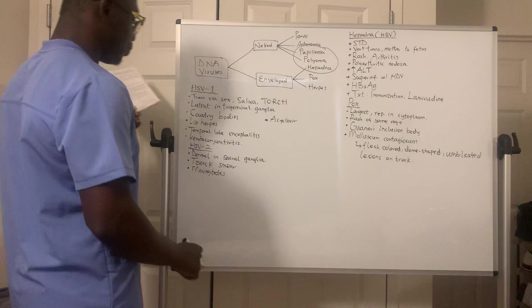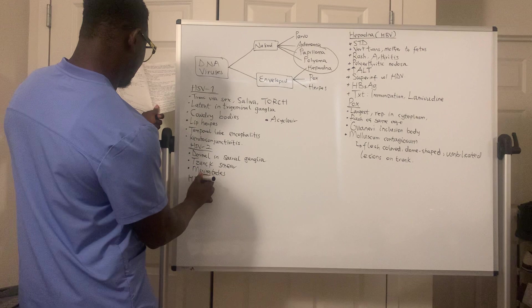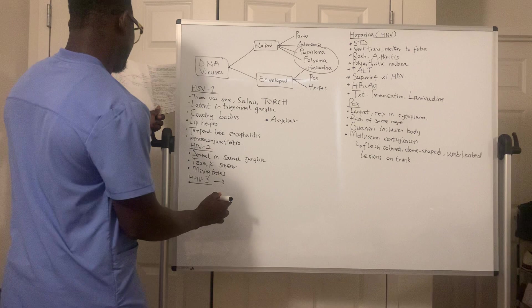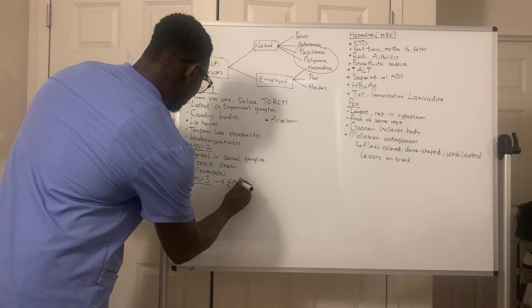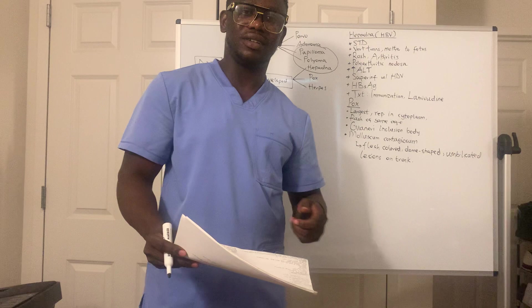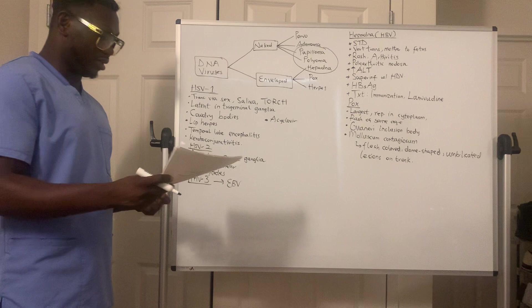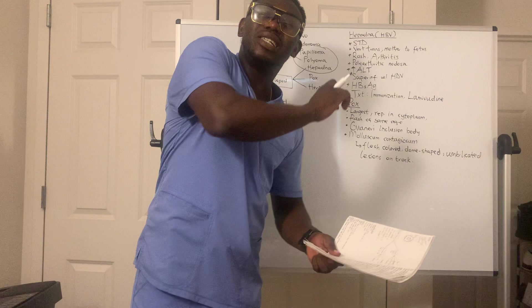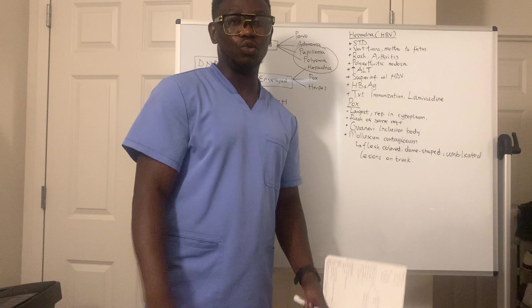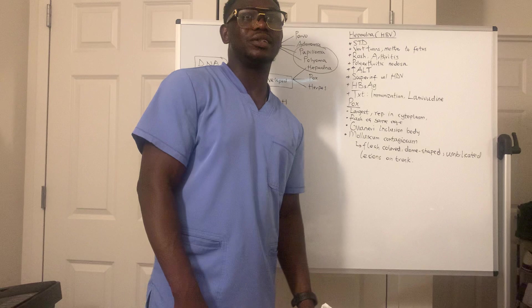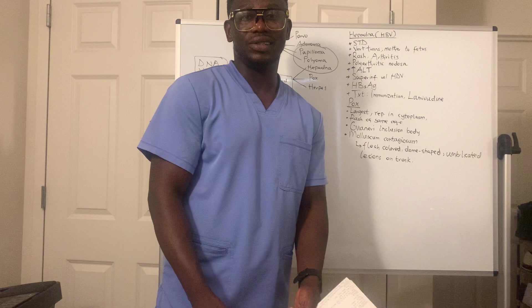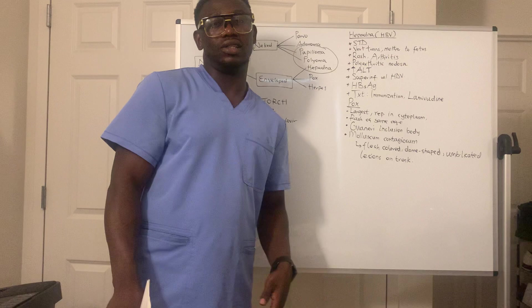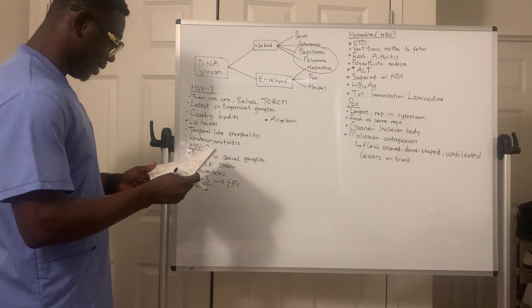HSV-3 (HHV-3) is Epstein-Barr Virus (EBV). This is classically called 'kissing disease.' When you see kissing disease in a question stem, think HHV-3. A very high-yield histological finding is the owl-eye appearance. So associate kissing disease with owl-eye appearance for EBV.